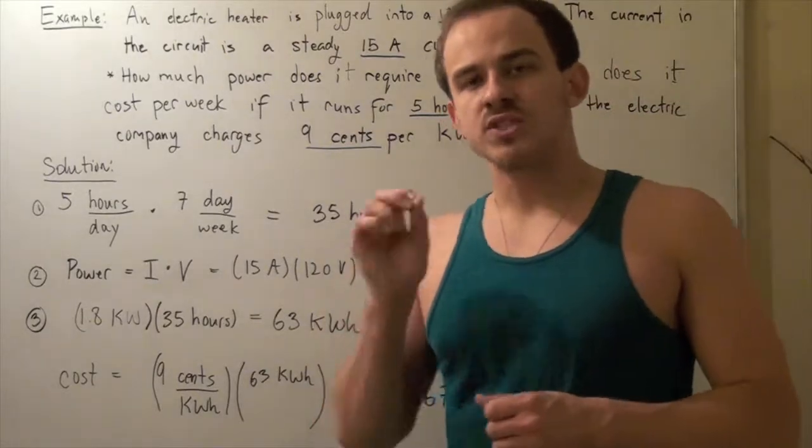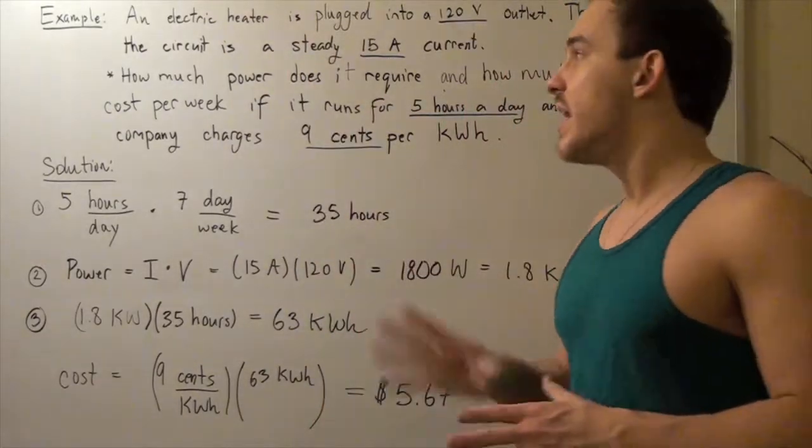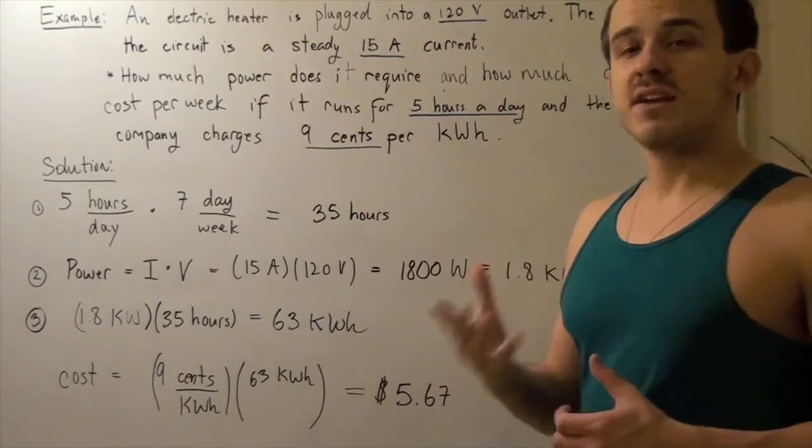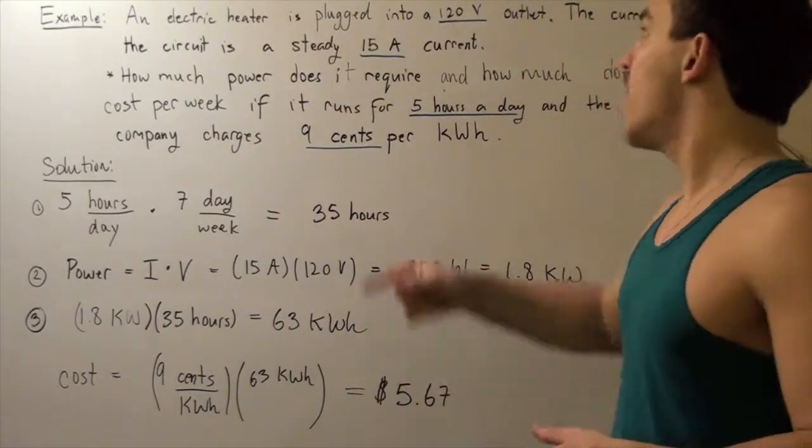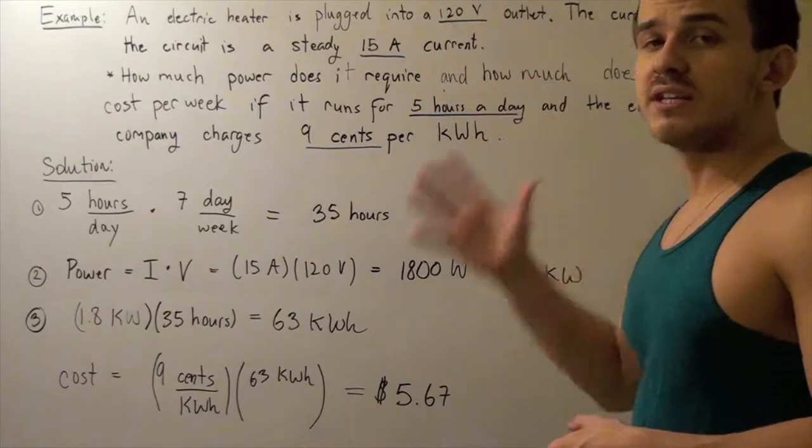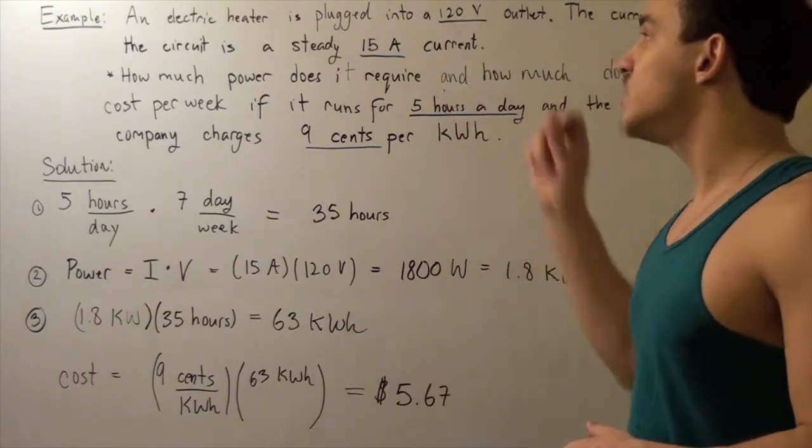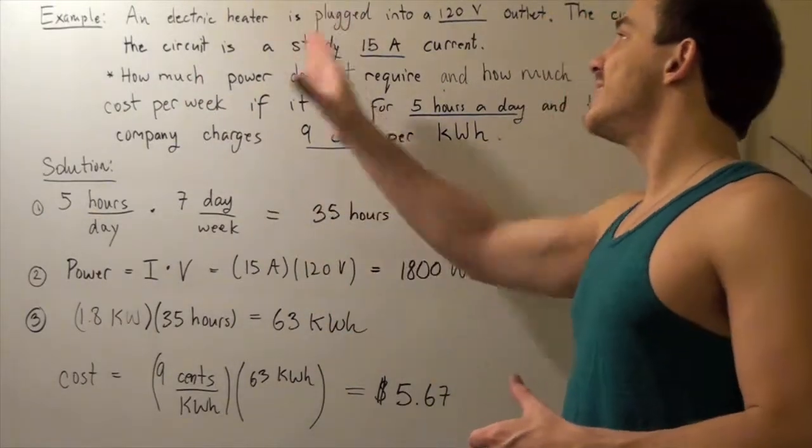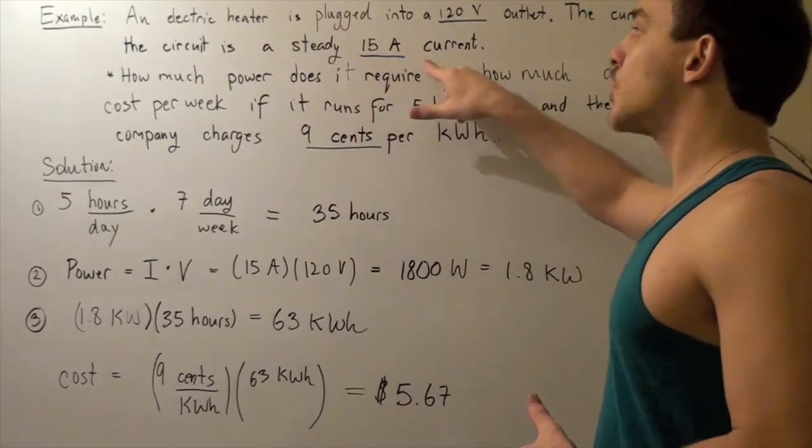In this lecture, we're going to look at the following example. We are given an electric heater plugged into a 120 volt outlet. The current in the circuit is a steady 15 amp current.